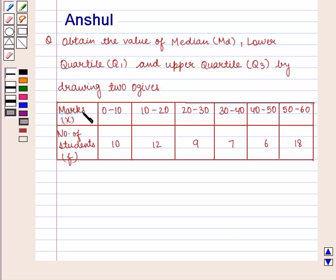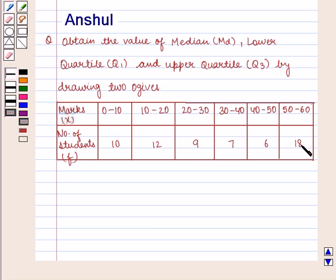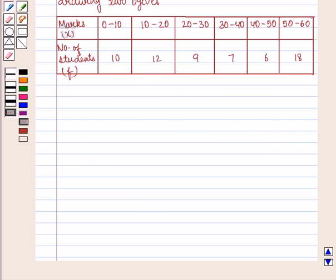Here marks are represented by X and F represents the number of students. There are 10 students who got marks from 0 to 10, 12 students who got marks from 10 to 20, 9 students got marks from 20 to 30, 7 students got marks from 30 to 40, 6 students got marks from 40 to 50, and 18 students got marks from 50 to 60.